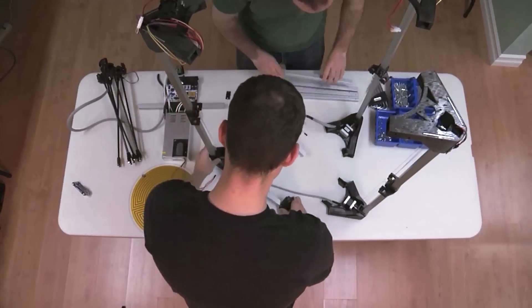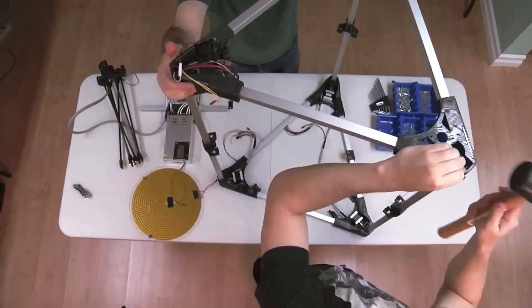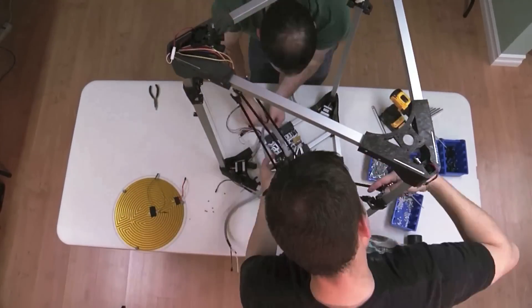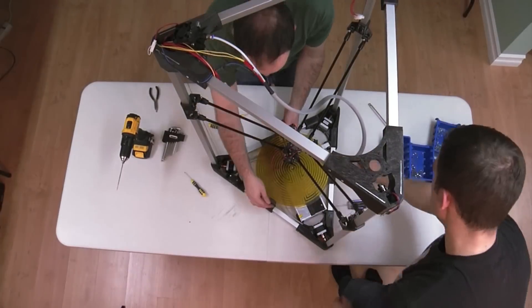Step-by-step video instructions will be available on our website to assist you. The towers, Delta assembly, and most of the components will already be assembled for you. To get started, you will only need to complete the frame assembly and plug in the electrical components.